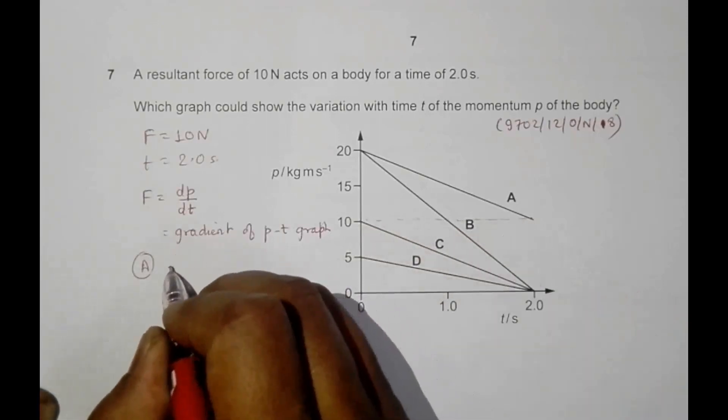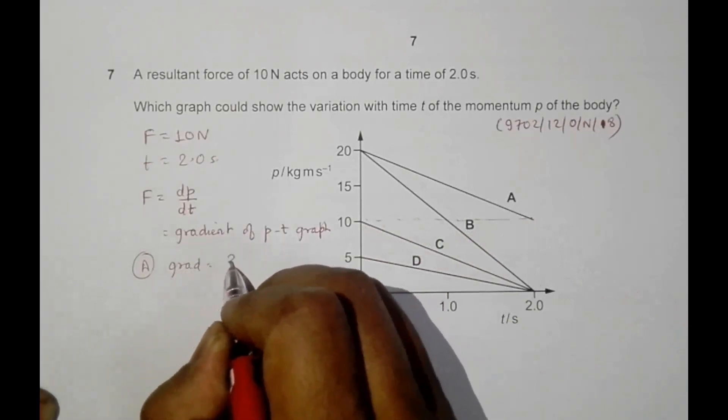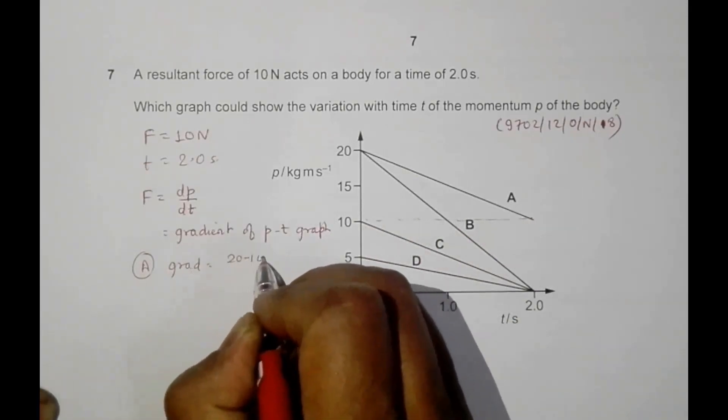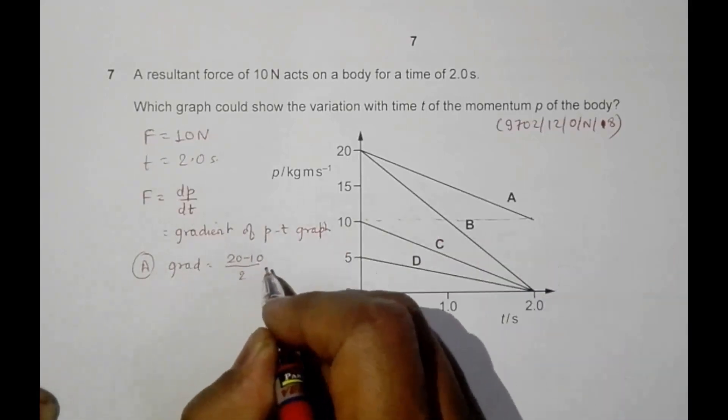We are talking of the magnitude, minus 10, and the time is 2 seconds. So it's equal to 10 by 2 equal to 5 Newton. So not correct. We are going to do this in choice number B.